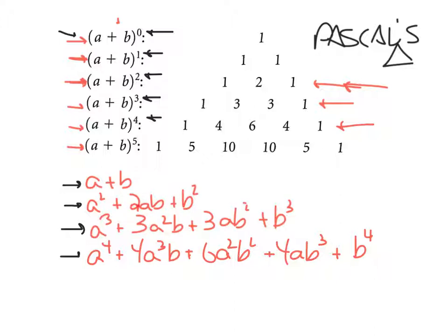One more pattern: if you look at the second term, the coefficient on the second term is always the same as whatever the main exponent is — it's just the same. And another pattern: if you look at the coefficients, they're symmetric. One, two, one. One, three, three, one. One, four, six, four, one. One, five, ten, ten, five, one. They're symmetric.